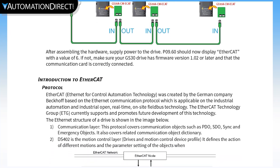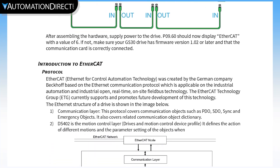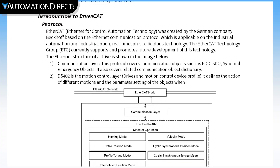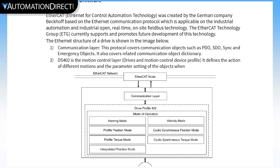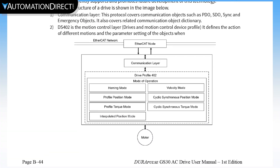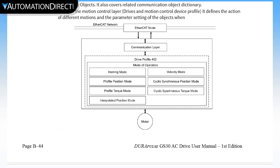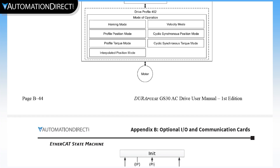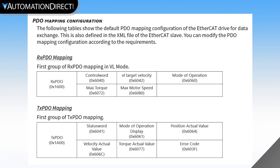All sub-devices use an EtherCAT sub-device information, or ESI file, to define the structure of the data shared between it and the main device. This makes it quite simple to get a system up and running. For our purposes, we're only dealing with the process data object, or PDO, to define the synchronous data shared every EtherCAT cycle.